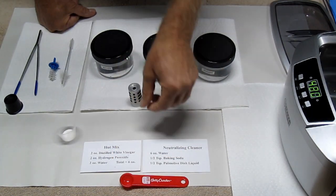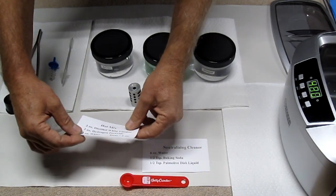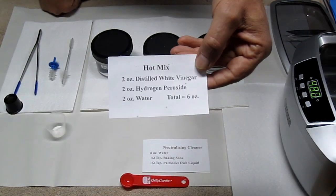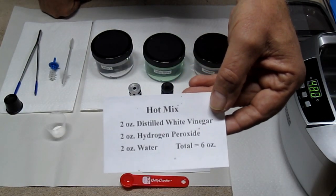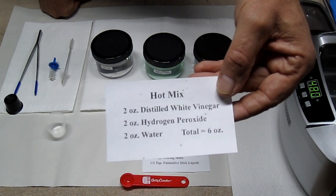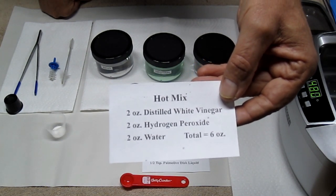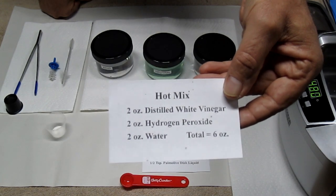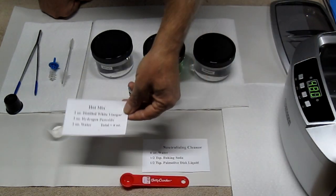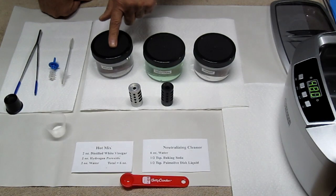Let me show you the recipe I'm going to be using. I'm going to make peracetic acid and I'm going to use a hot mix which is going to be 2 ounces of distilled white vinegar, 2 ounces of hydrogen peroxide and 2 ounces of water. I want to end up with 6 ounces total and that's going to be in this jar.